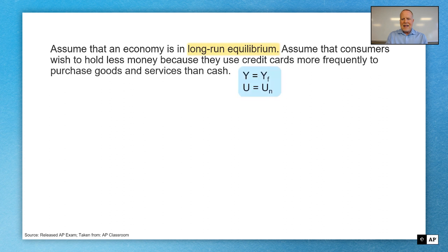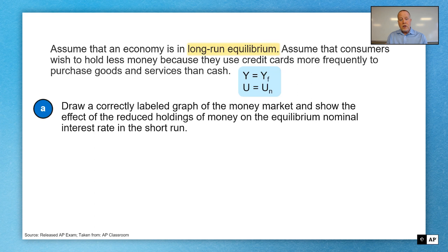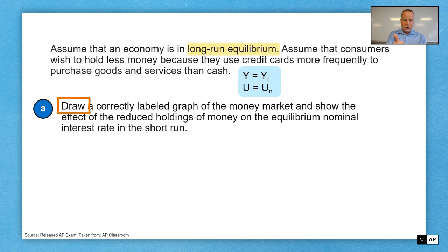Long-run equilibrium tells us that output is equal to full employment and that unemployment is equal to the natural rate. Part A: draw a correctly labeled graph of the money market and show the effect of the reduced holdings of money on the equilibrium nominal interest rate in the short run. Make sure you highlight any verbs within the question because that's what you have to do — in an FRQ, you have to provide new information, data, or graphs.